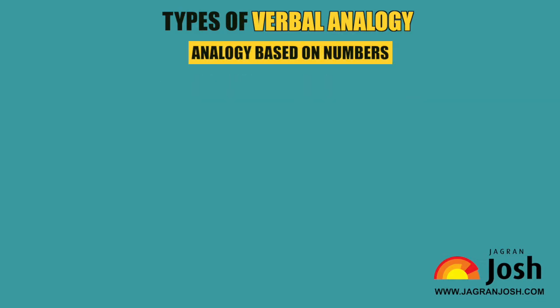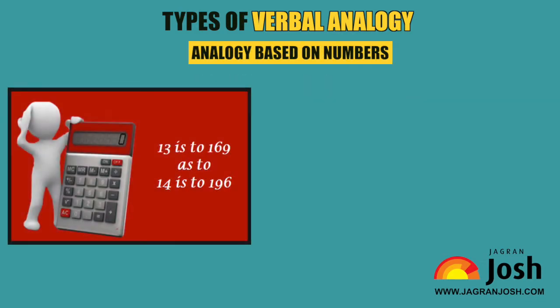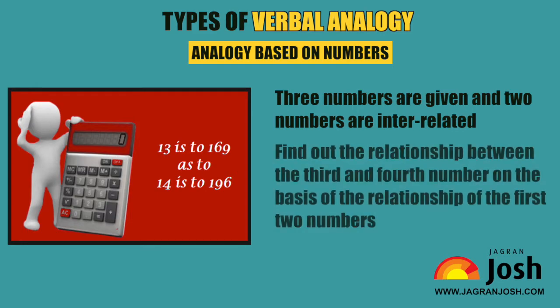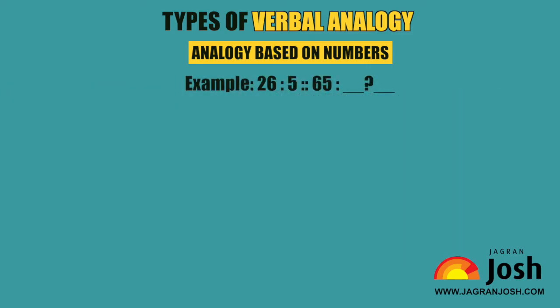Analogy Based on Numbers: In these types of questions, three numbers are given and two numbers are interrelated to each other in some way. The student is required to find out the relationship between the 3rd and 4th number on the basis of the relationship of the first two numbers. Example: 26, 5, 65 — options are a. 9, b. 8, c. 7, d. 6.